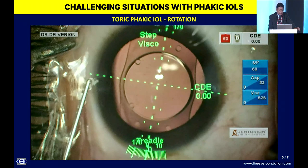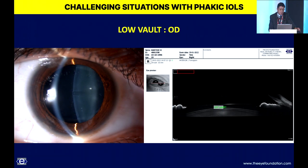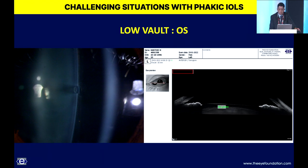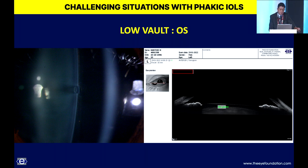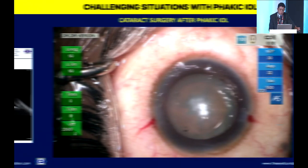Low vault examples of 120 microns and 85 microns (versus normal 250–750 range) are shown in patients followed up for almost four years with no evidence of cataract. Though a 500-micron vault is ideal, even with lower vaults—as long as the anterior capsule is clear and the patient is happy with visual outcome—no intervention is needed. This is why the surgeon does not operate both eyes on the same day.